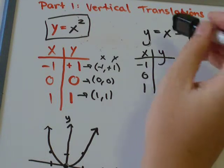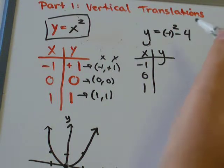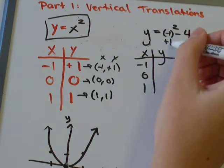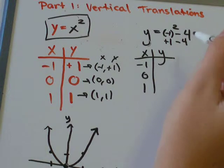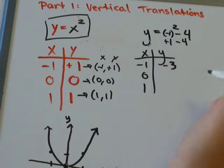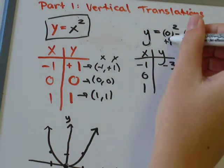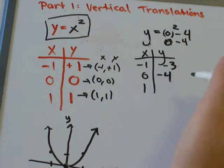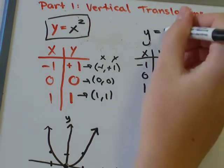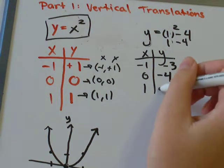So, if x is negative 1, now I've got negative 1 squared minus 4. So, negative 1 squared, negative 1 times negative 1 would be positive 1, minus 4. 1 minus 4 would just be negative 3. When x is 0, I would have 0 minus 4. That would be negative 4. And if x was 1, I would have 1 minus 4, which is also negative 3.